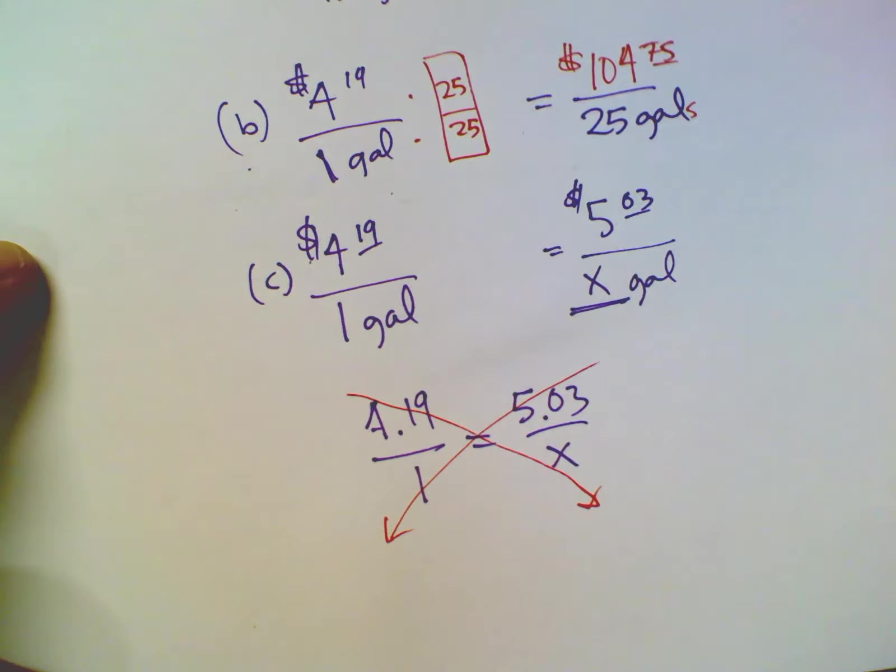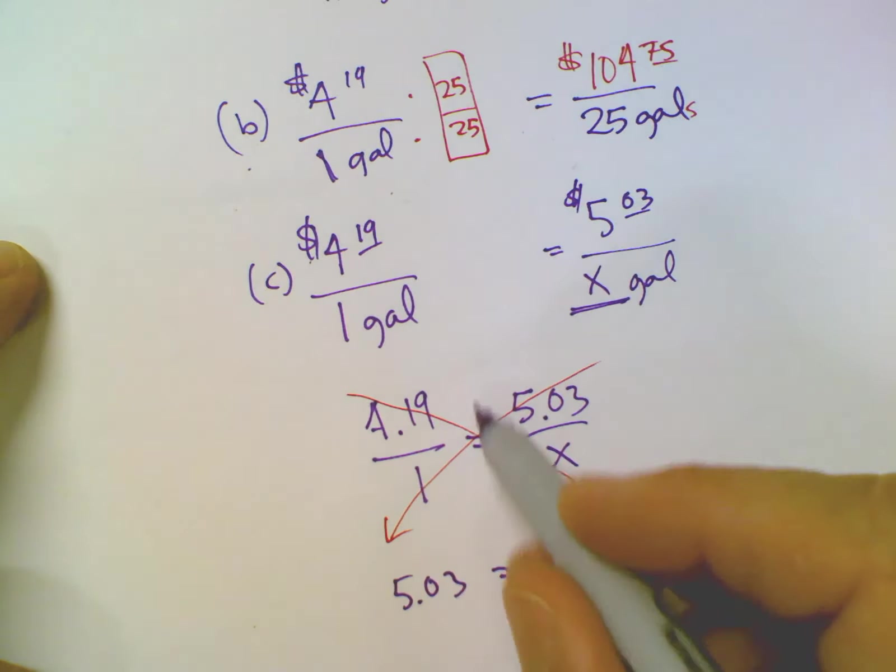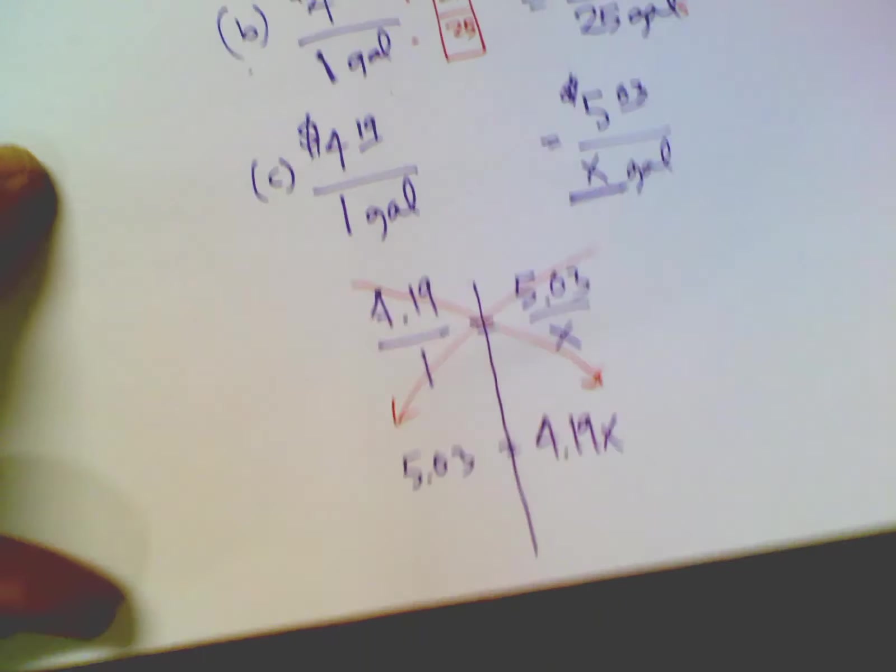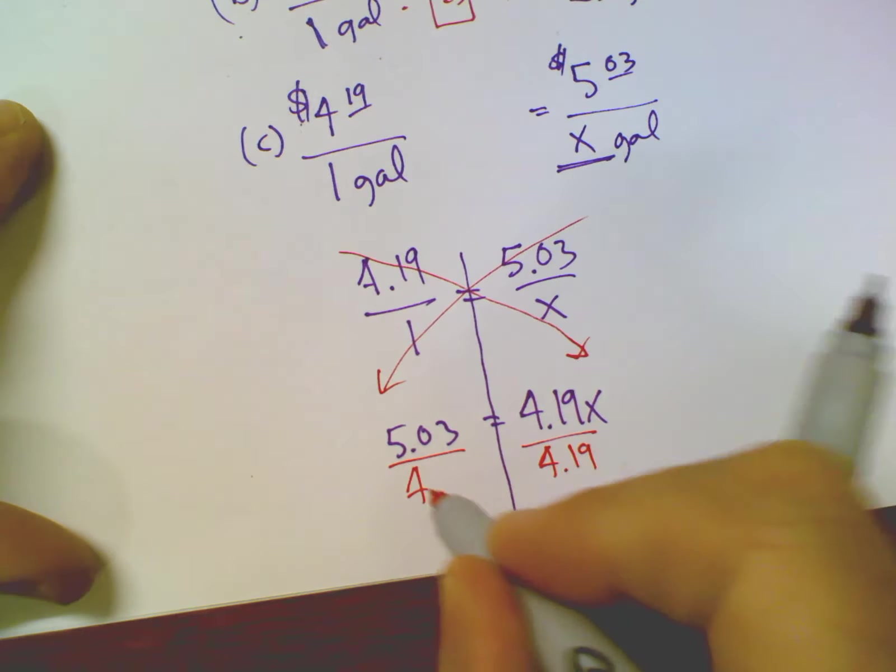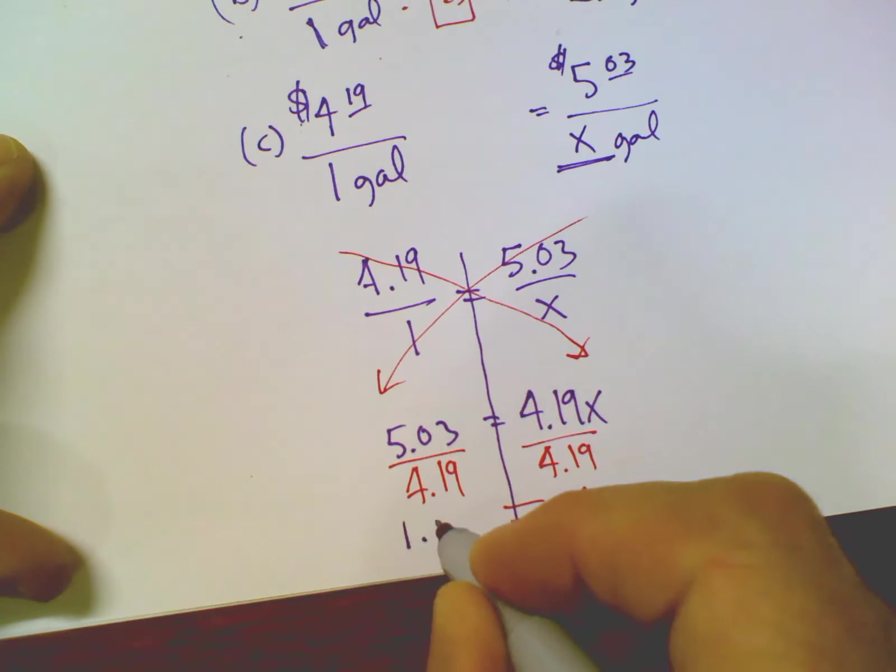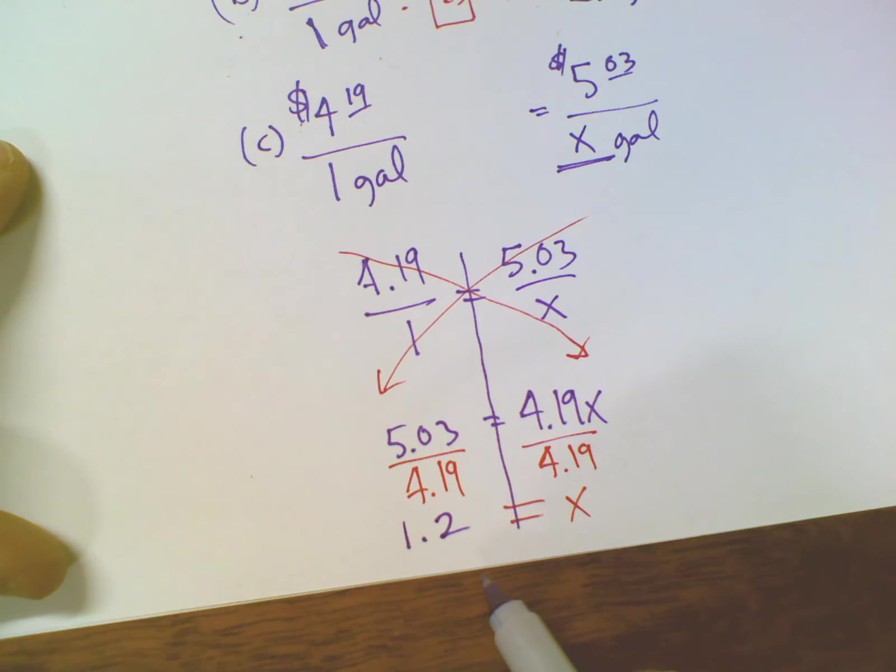So I cross multiply. So I'm going to get 5.03, $5.03 times one is 5.03 is equal to, remember the equal sign just continues on down and then $4 and 19 cents or 4.19 times X is 4.19X. And then to solve this equation, you divide both sides by 4.19 because that's how you're going to get that X alone. Right? So we get our X alone. I have X equals, and this is again, where I'm going to use a calculator for that one. So 5.03 divided by 4.19 equals, so it comes out to be, and I'm going to round to the 10th. It comes out to be 1.2.